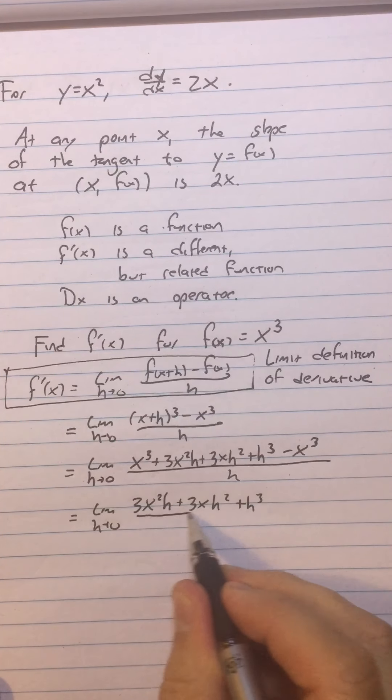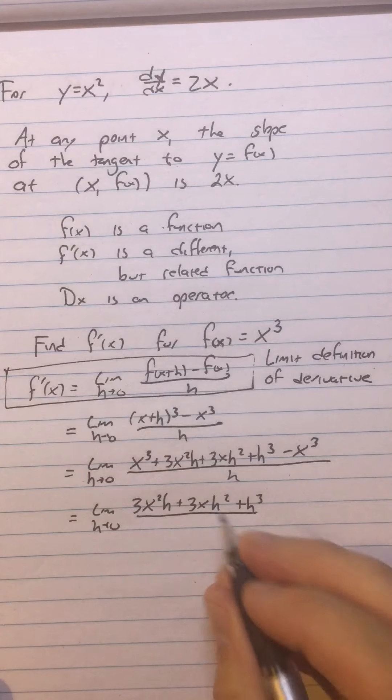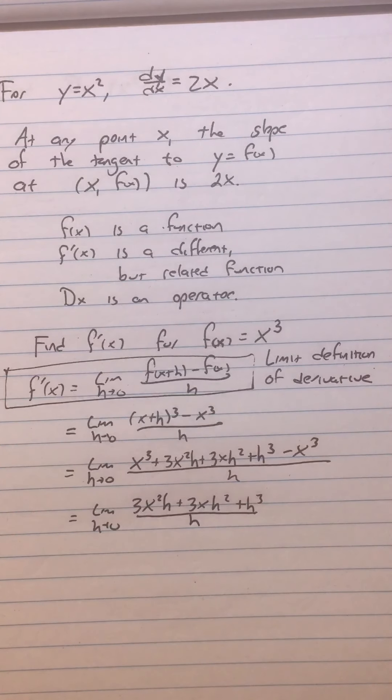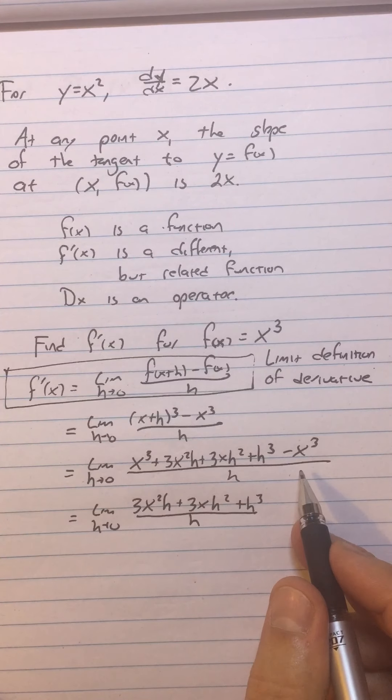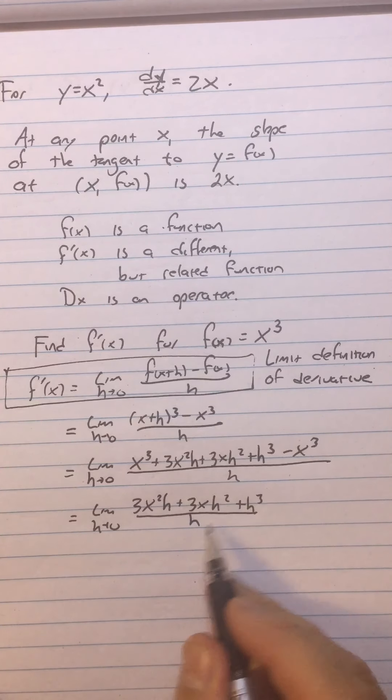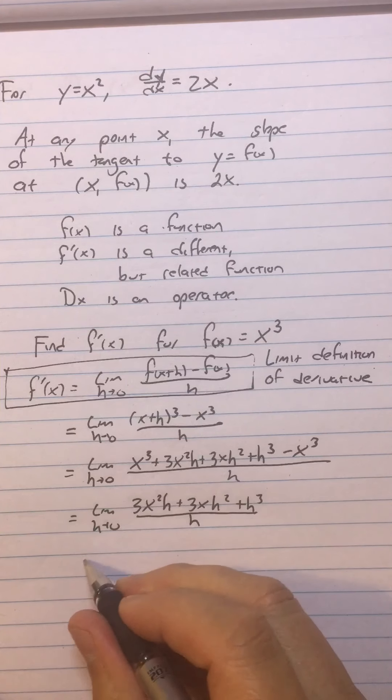So then I get 3x squared h plus 3x h squared plus h cubed. And by the way, what makes that happen is that f of x is a polynomial. For any polynomial that will happen. Now you will always, because everything that didn't have h in it canceled out, you will always be able to reduce the h at this step.